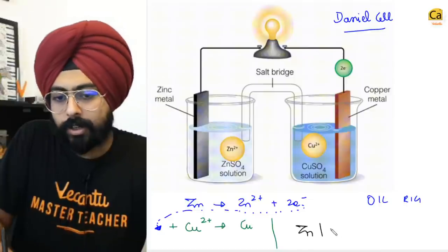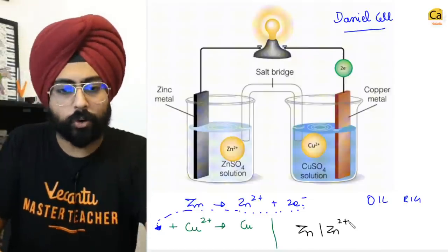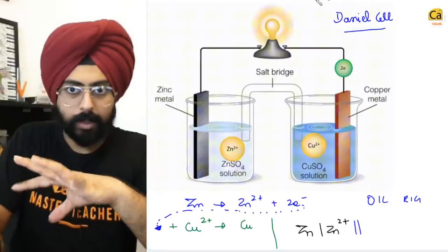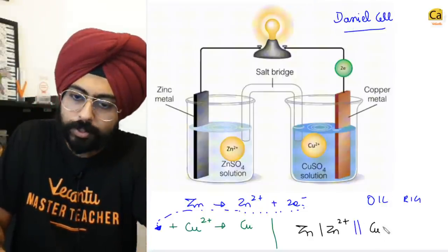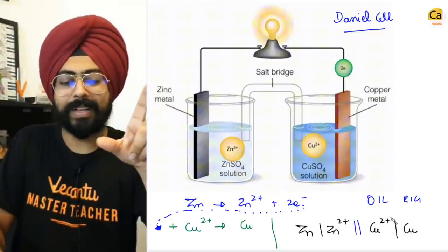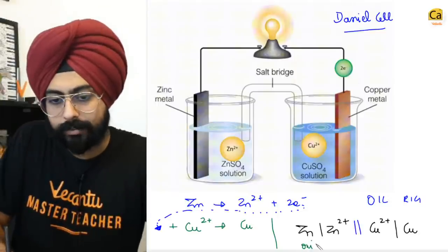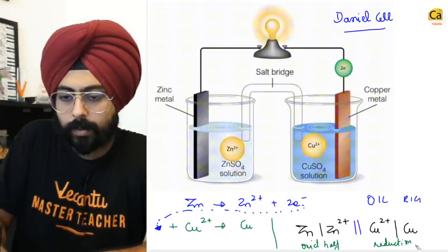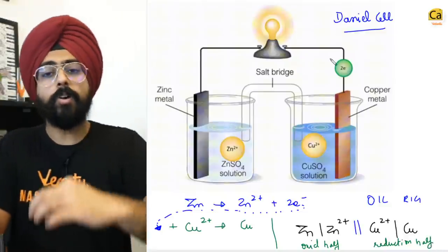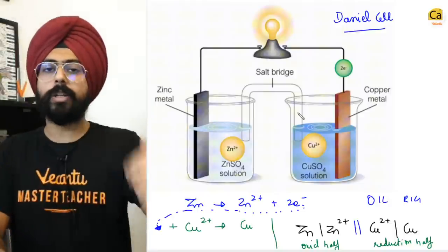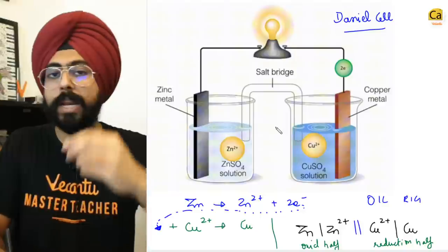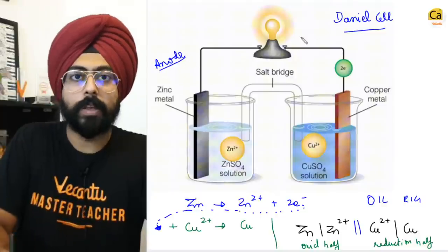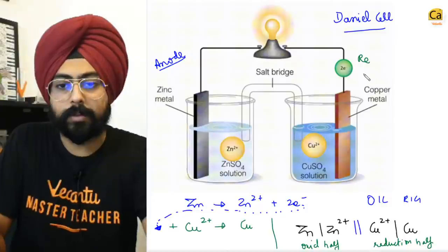Zinc is getting converted into Zn²⁺ — you can write zinc SO₄ here as well. This left side is separated from the right side, and on the right side Cu²⁺ is going towards copper. On the left-hand side you have written the oxidation half; on the right-hand side the reduction half. This is the representation of the cell. Anode and cathode are defined based on where oxidation and reduction happen — wherever oxidation happens, that place is the anode.